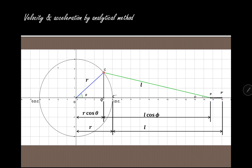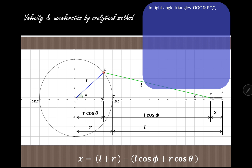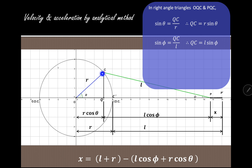X is the displacement of the piston. In the right angle triangles OQC and PQC, sin theta is equal to QC upon R, therefore QC is equal to R sin theta. In this right angle triangle, sin theta is the opposite side divided by the hypotenuse OC, so QC equals R sin theta.